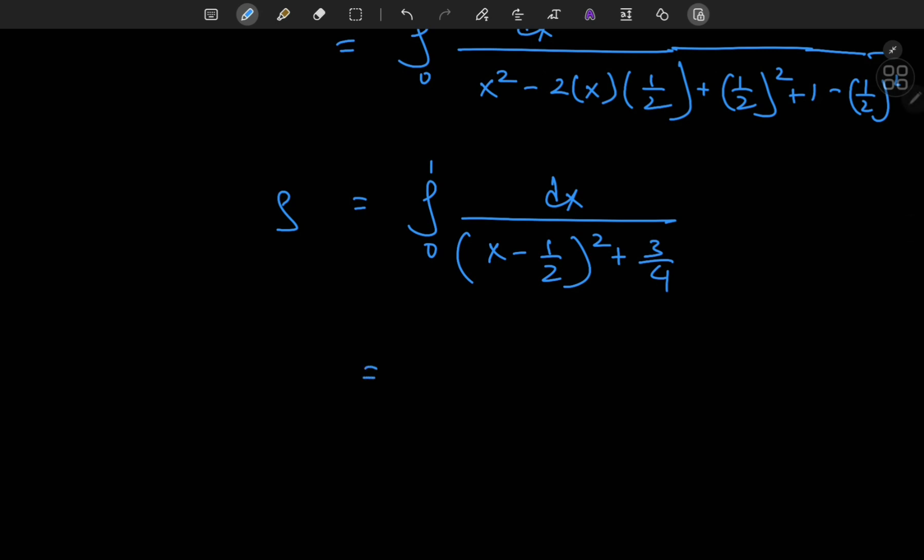So we have this thing here that is actually root 3 by 2 squared in disguise. So that means this sorts out to inverse tangent 2x minus 1 by 2 times the reciprocal of this thing. So that's 2 by root 3.